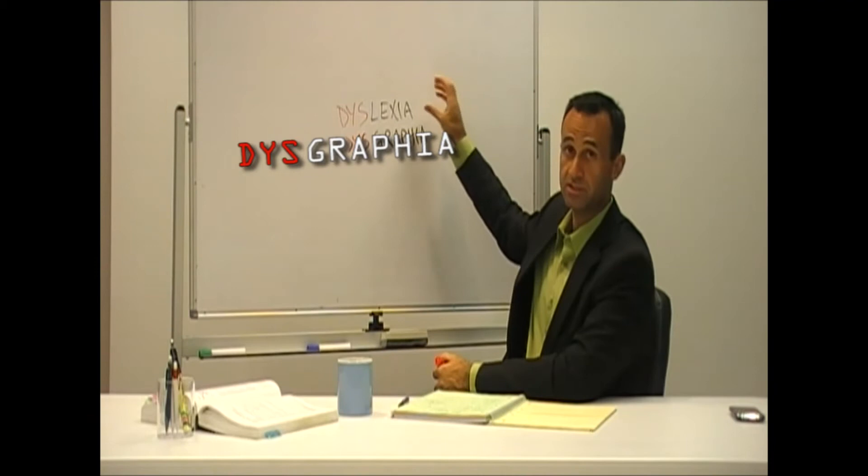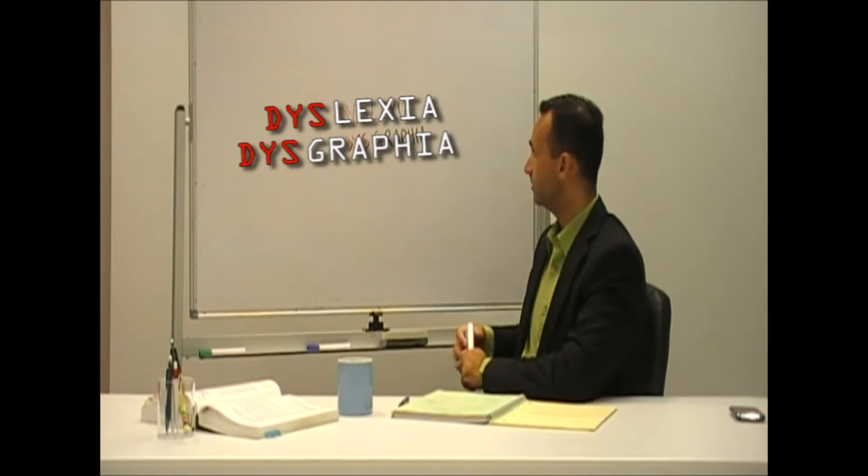So Henry Winkler has both of these: dyslexia, difficulties reading, and dysgraphia, difficulties with writing.